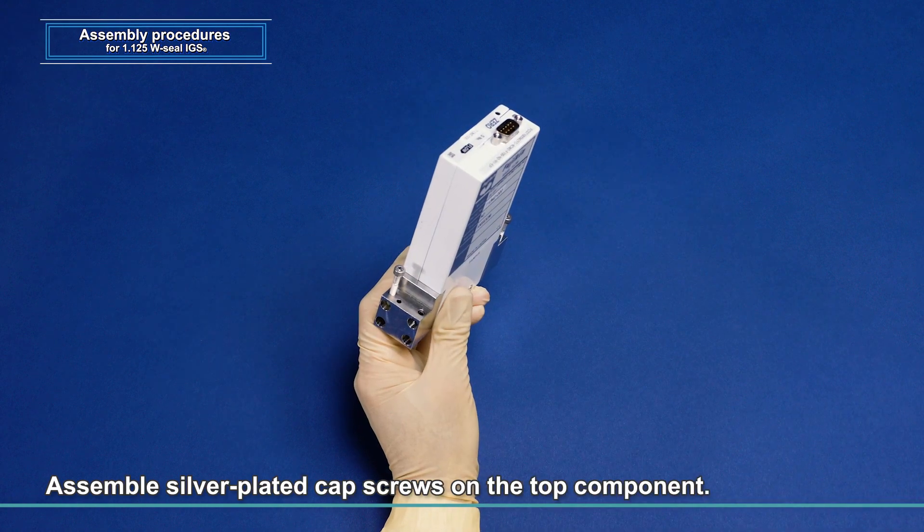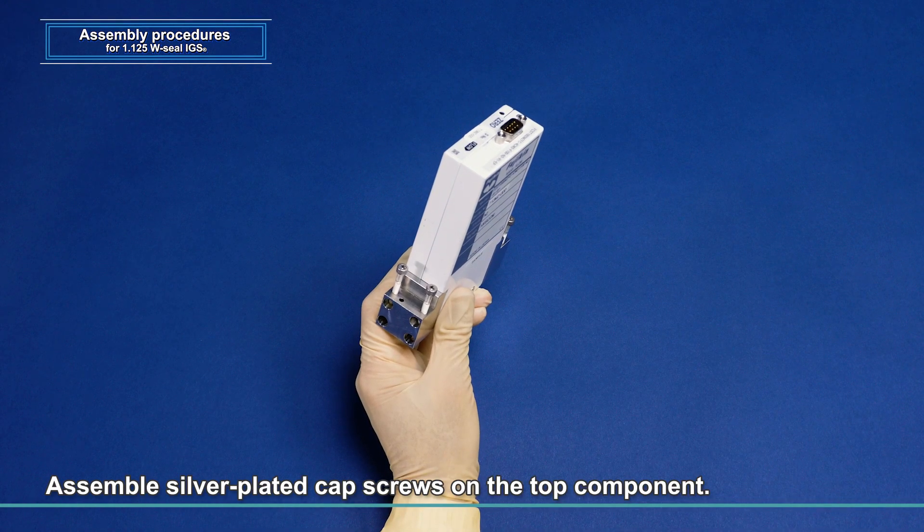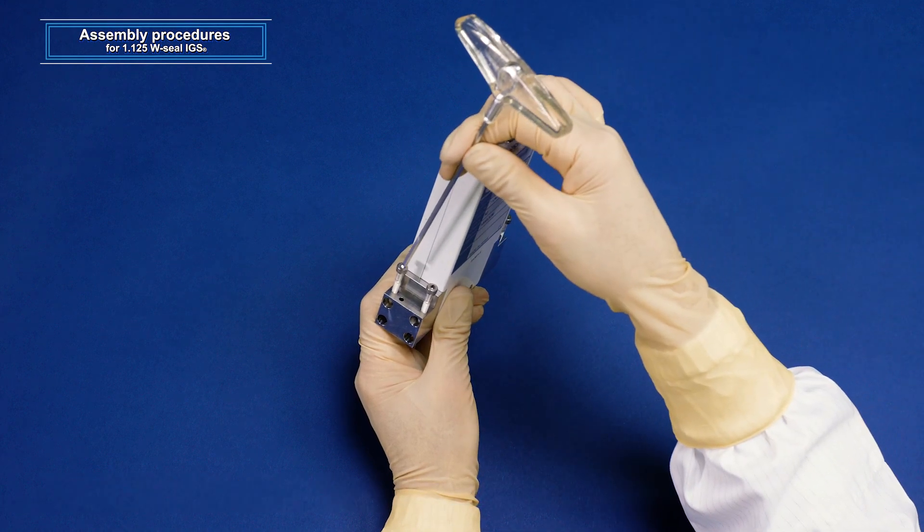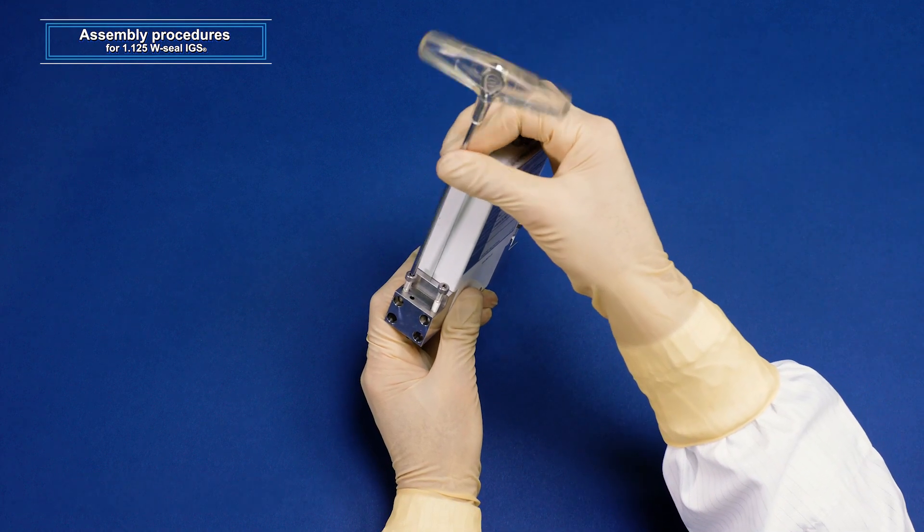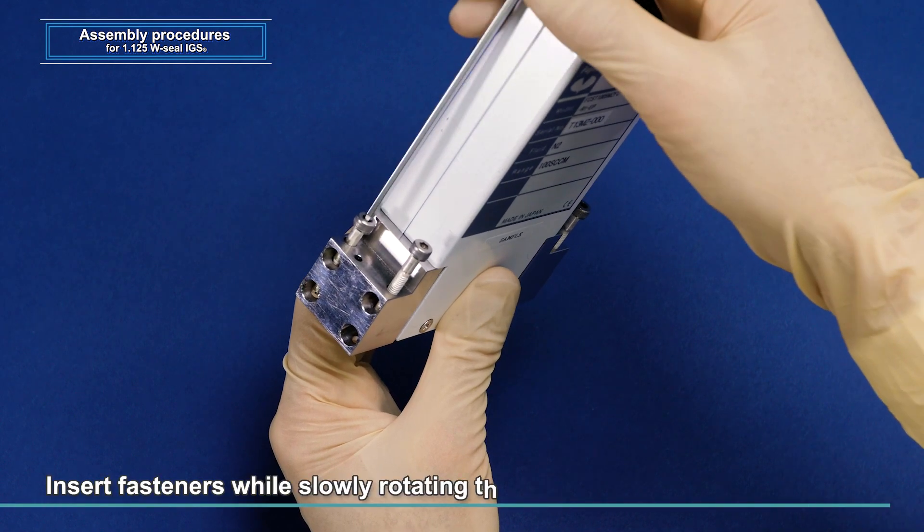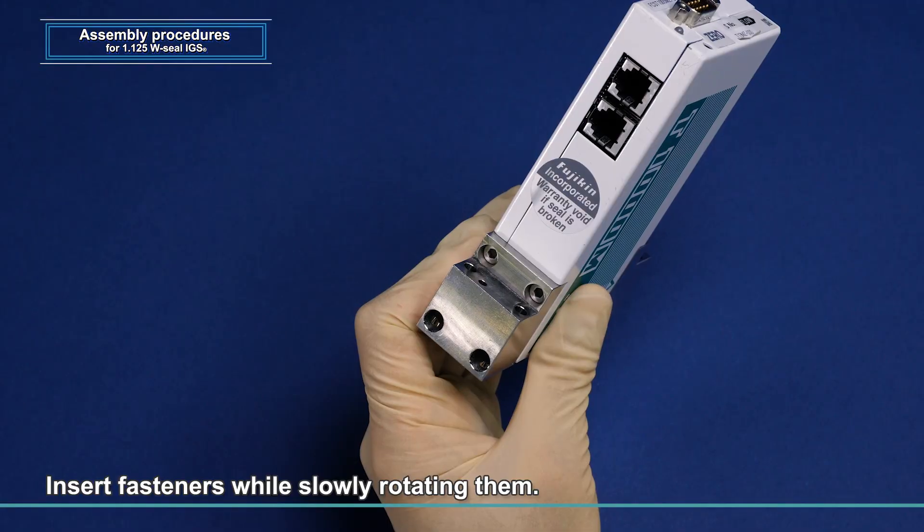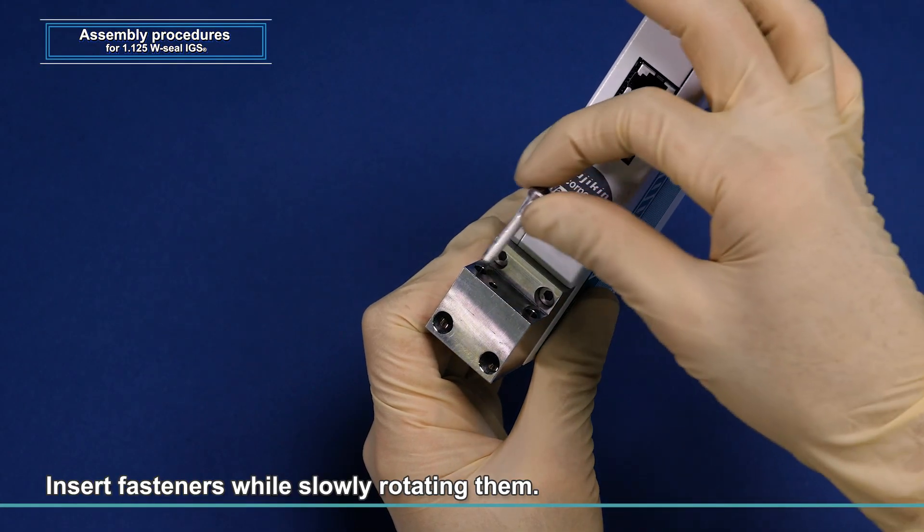Assemble silver-plated cap screws on the top component. The mounting hole has an O-ring inside which holds a fastener and prevents it coming off. Therefore, insert fastener while slowly rotating them into the hole. Forcing to insert it may damage the O-ring.